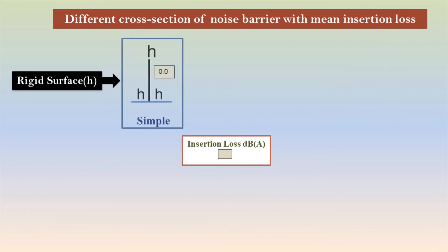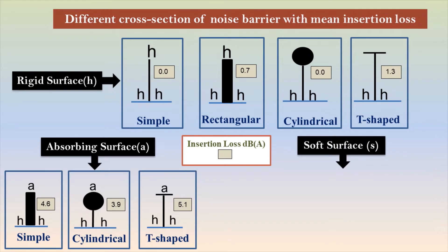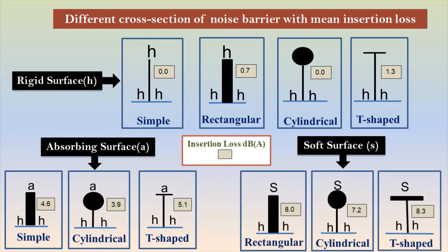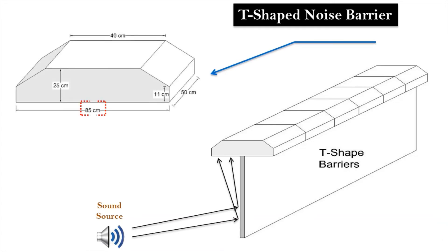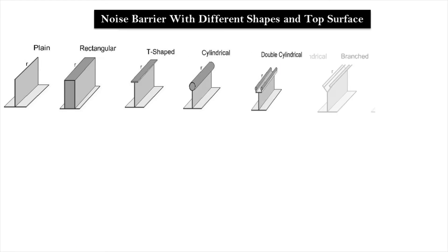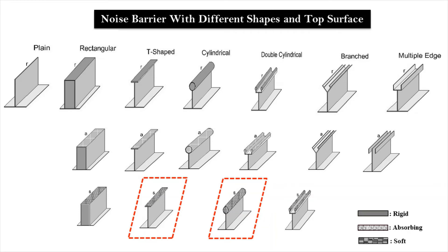There are different cross-sections of noise barriers with mean insertion loss. T-shaped, rectangular, and cylindrical edged noise barriers with different tops — especially rigid, absorbing, and soft surfaces — were examined. The most effective design was a T-shaped barrier with a soft upper surface. The cap at the top was made of porous wood cement, 85mm wide and 25mm thick, providing 2 to 3 dBA reduction. The soft-capped T-shaped barrier provides high noise attenuation, and the cylindrical design performs worst with soft surfaces.